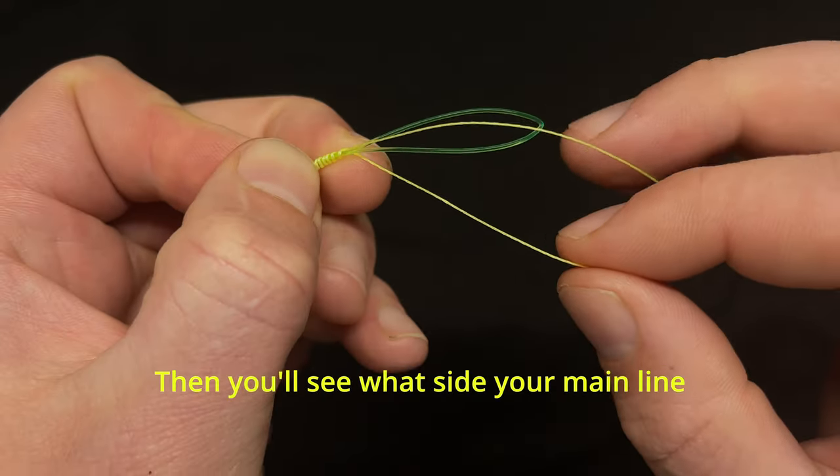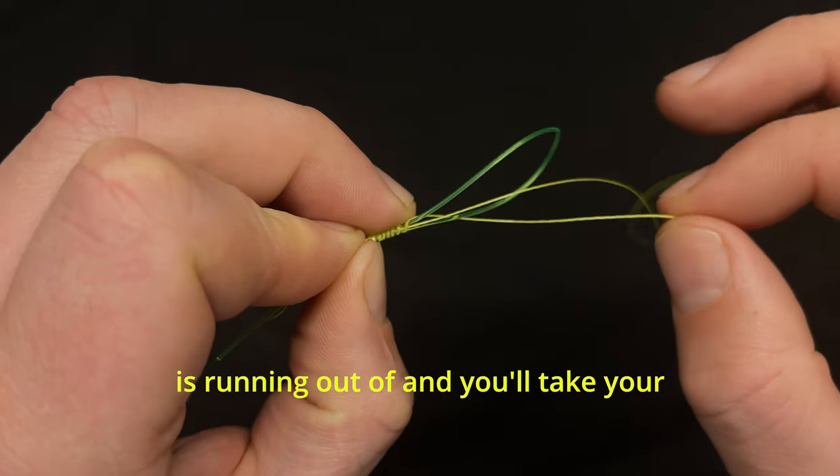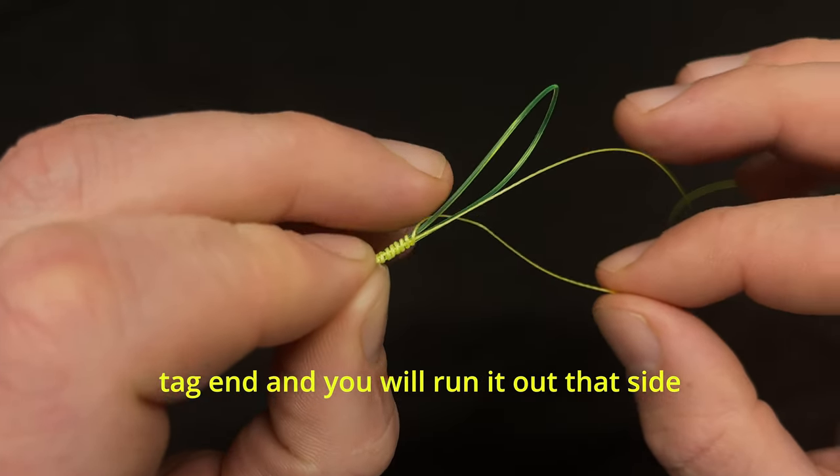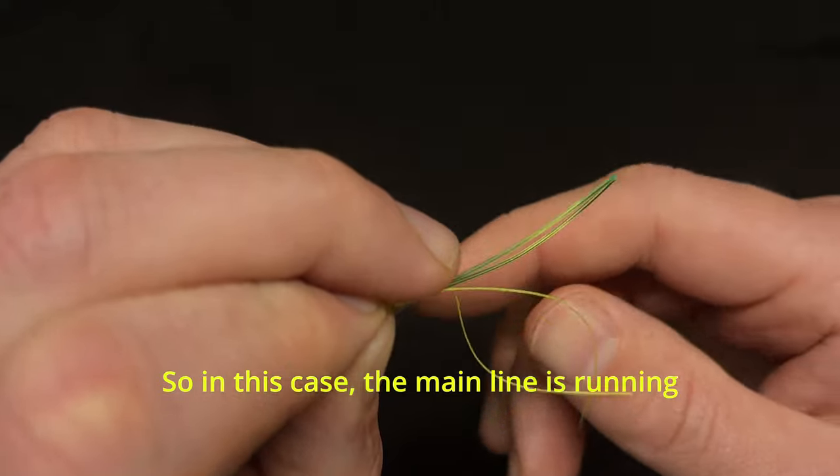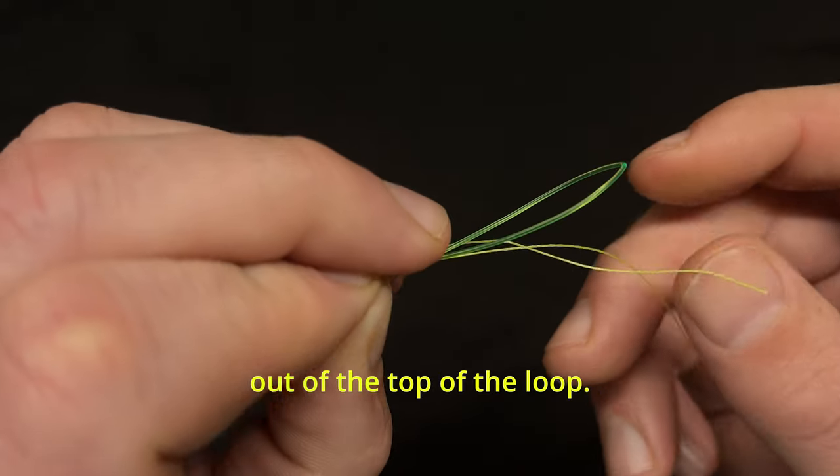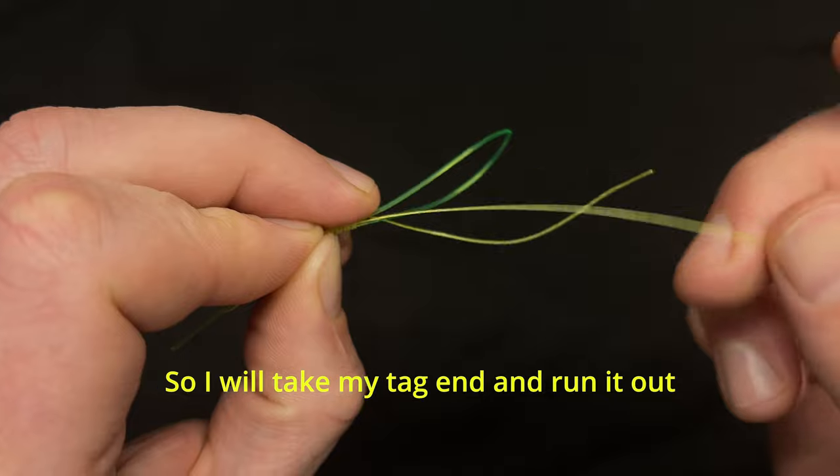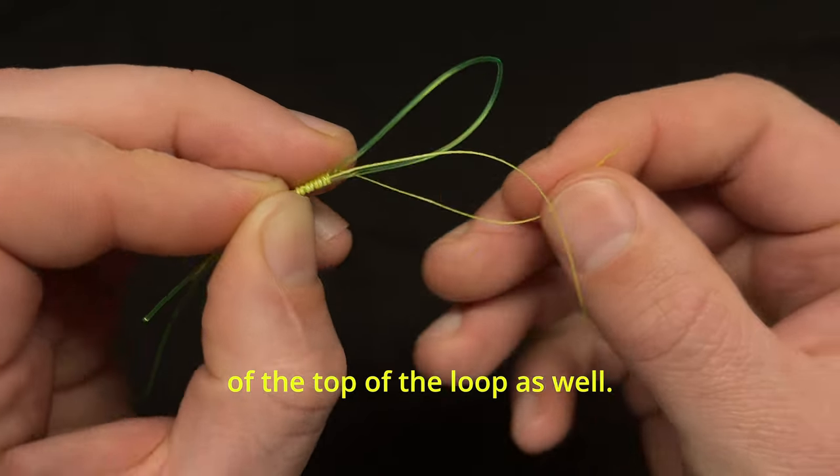You'll see what side your main line is running out of and you'll take your tag end and run it out that side of the loop as well. In this case the main line is running out of the top of the loop, so I will take my tag end and run it out of the top of the loop as well.